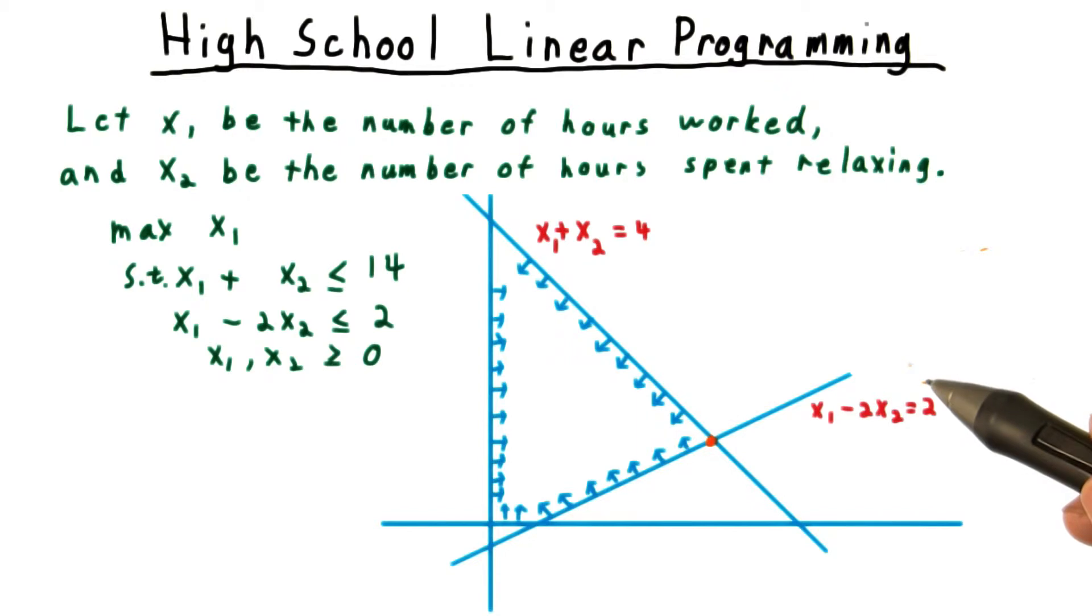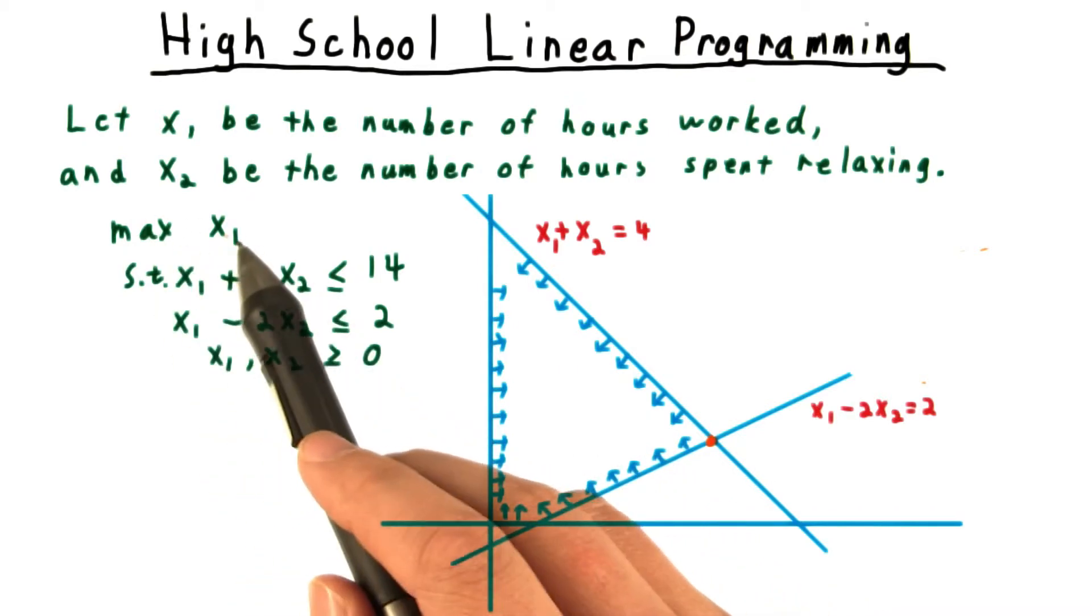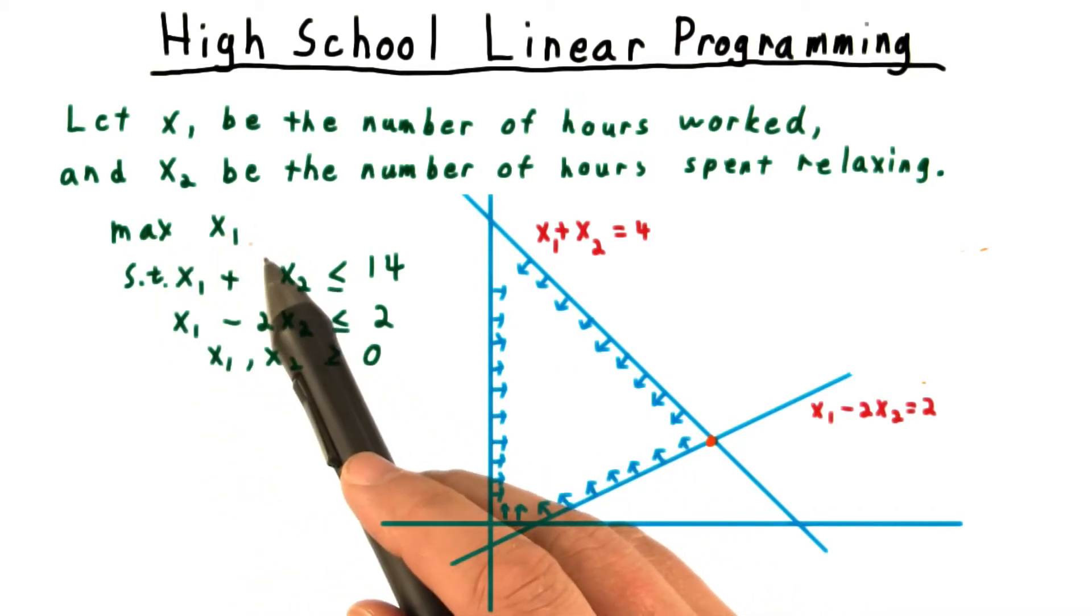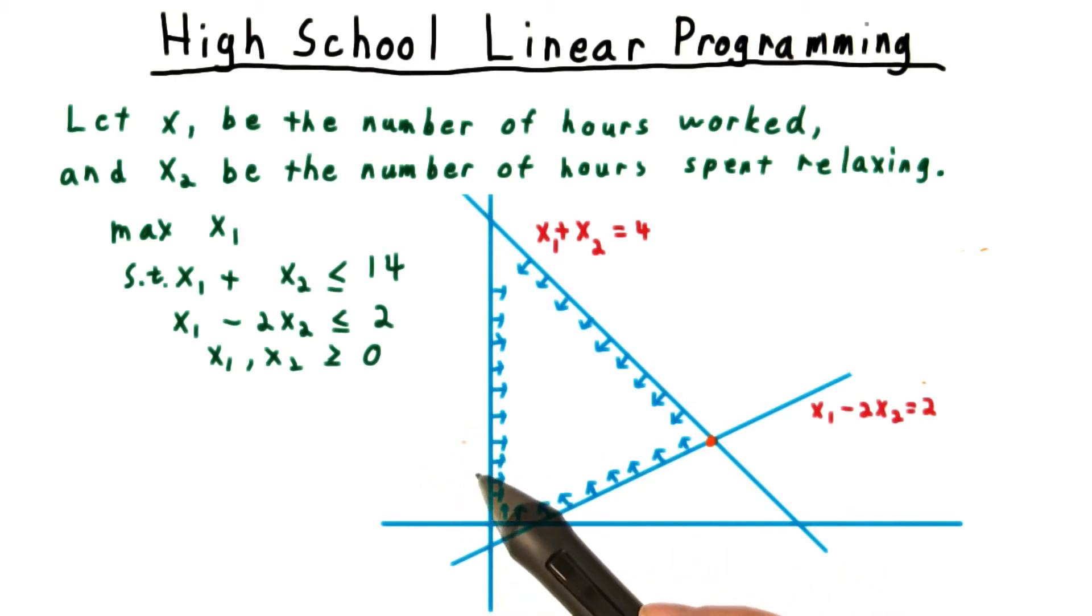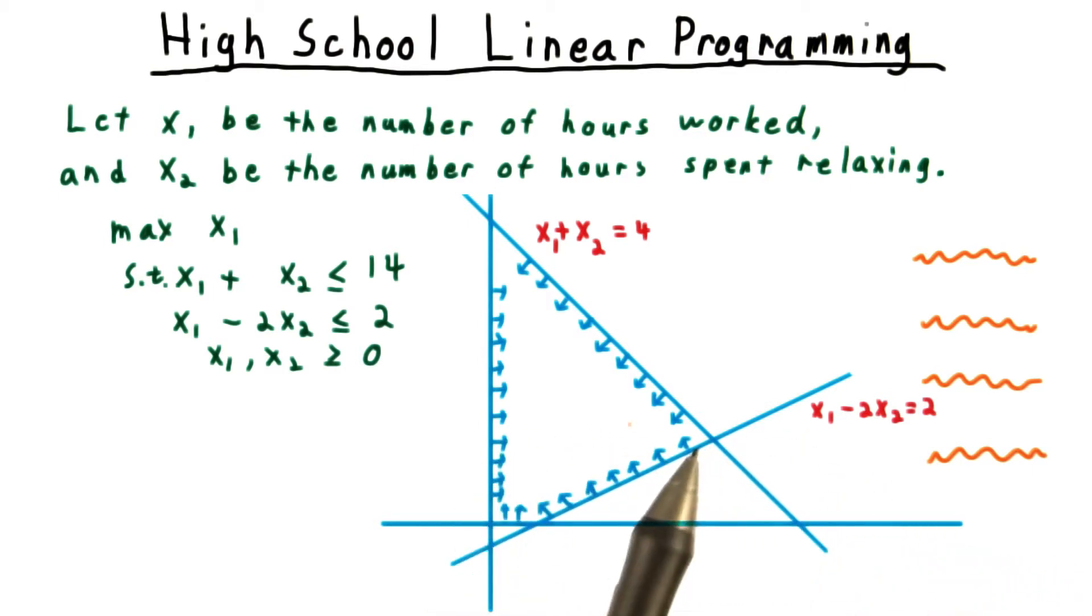Why is the optimal solution at one of the vertices? Well, remember that in this problem and all similar ones from high school, the objective function, that is the thing we're optimizing, is linear. The only thing that matters is how far we can move in a certain direction. In this case, the x1 direction, but it could be any direction in the plane. If you like, you can think of there being a giant magnet infinitely far away, pulling our point x in a certain direction. In trying to get it as close as possible to the magnet, this point must end up at one of the vertices.